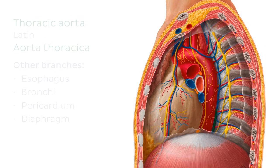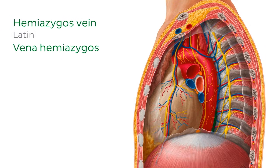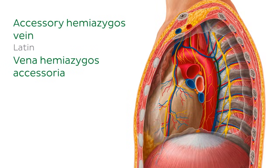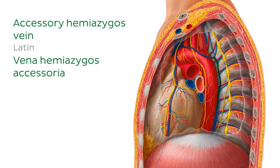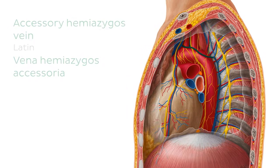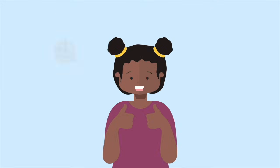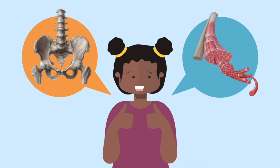Running laterally to the descending thoracic aorta are the hemiazygous and accessory hemiazygous veins, which receive the contents drained by the left posterior intercostal veins. And in this illustration, you can also see the left superior intercostal vein, which drains the uppermost intercostal spaces.